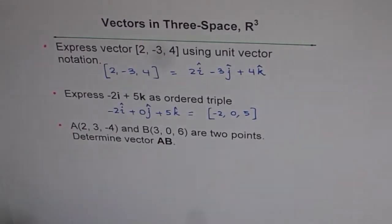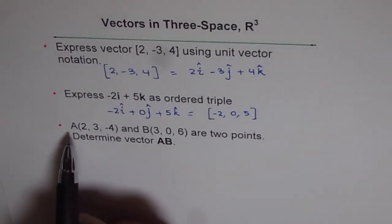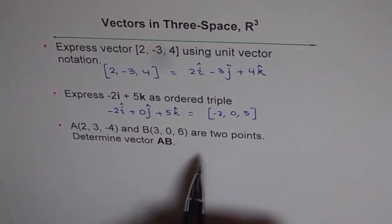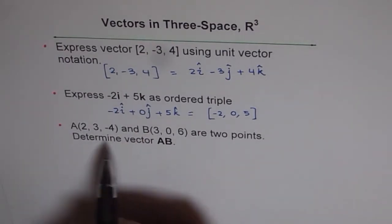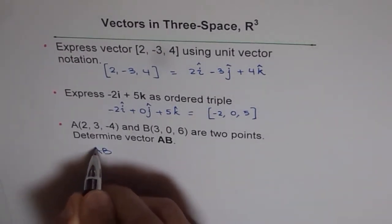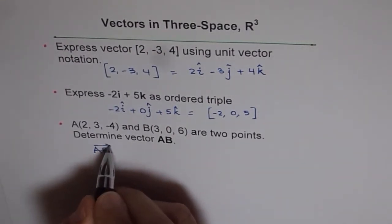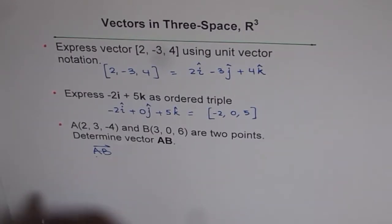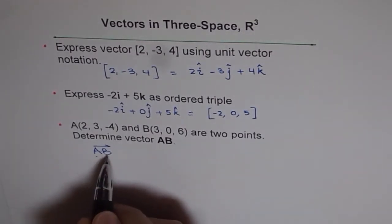Let's read this question once again. So we have two points here, a and b, and we need to find what is the vector AB. Vector AB, if you are given two points, means we are moving from a to b. So a is the tail and b is the head.